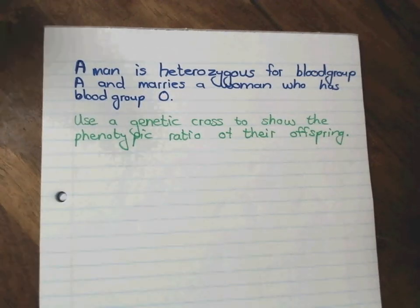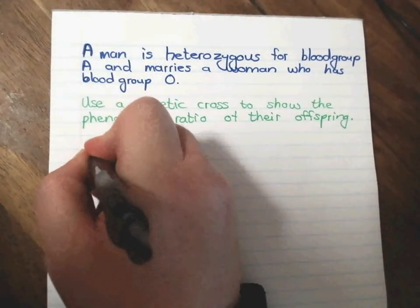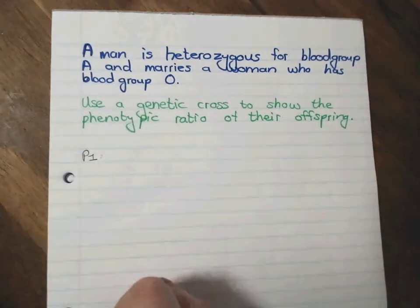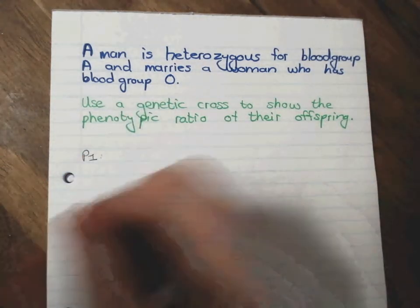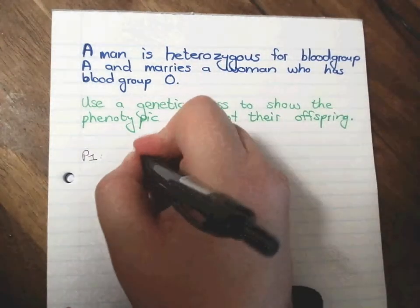Right, so let's start with the stuff that we know we have. So we always start with P1 and later on we're going to write F1 because that is worth a mark. And we always start with what do they look like, so we're going to start with the phenotype.